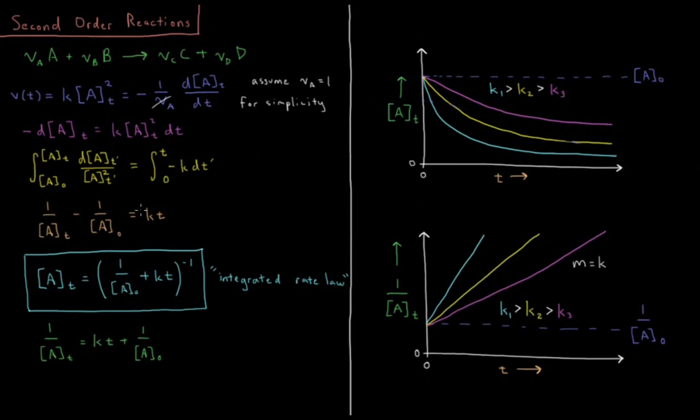We see from this equation here that if I plot 1 over A of T, that's equal to K T plus 1 over A naught, and this is a linear equation. If I plot the inverse of the concentration versus time for a second order reaction, I'll get a straight line.